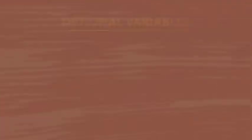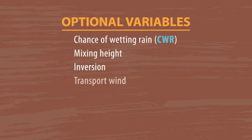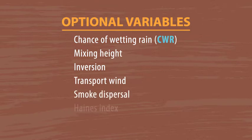The remaining fire weather forecast variables are called optional variables because they may not be included in the forecast. These variables commonly change from region to region across the United States depending on local needs. Common optional variables include chance of wetting rain or CWR, mixing height, inversion, transport wind, smoke dispersal, Haines Index, and Lightning Activity Level or LAL. These optional variables add supplemental information to ensure that you have the most accurate information at your fingertips.